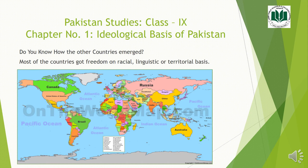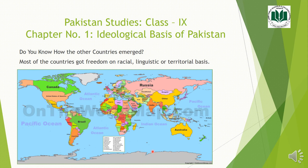About other countries, the question is very simple: do you know how other countries emerged? Most of the countries got freedom on racial, linguistic, or territorial basis. You can see on the world map that all these countries have now well-marked boundaries. In the past, most of these countries remained part of great empires, such as the Roman Empire, the British Empire, and the Ottoman Empire. With the passage of time, they got freedom on racial, linguistic, or territorial basis and spread in the world as independent countries.